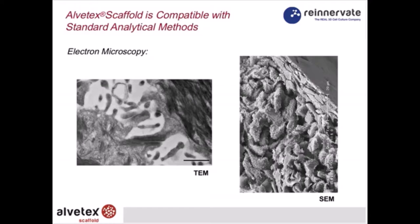Electron microscopy is also compatible. On the left is a transmission EM image showing the ultrastructure of two cells joined in the middle by tight junctions — a nice example of cells growing in 3D imaged at very high magnification. You can see the ultrastructure of organelles, including keratin elements; this is from a skin preparation. On the right, a scanning electron micrograph shows examples of cells growing throughout the scaffold at higher magnification.